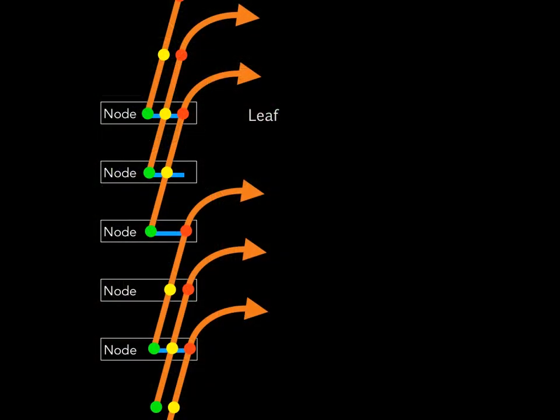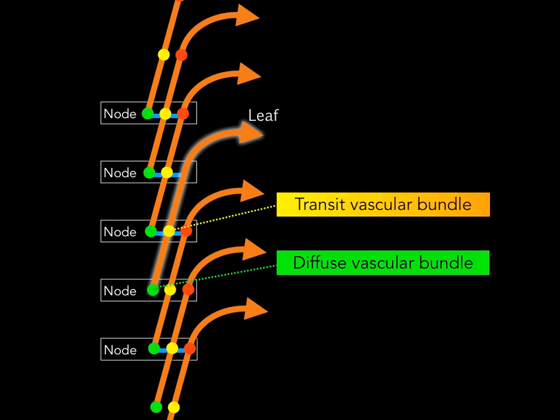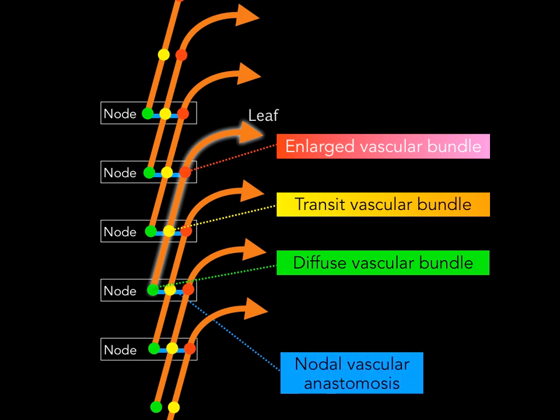This shows a vertical vascular bundle in rice. Three nodes and a leaf are connected to each other. Each node has three different vascular bundles: diffuse vascular bundle, transit vascular bundle, and enlarged vascular bundle. They are connected by nodal vascular anastomosis.